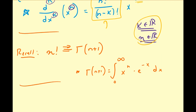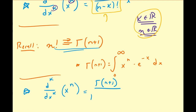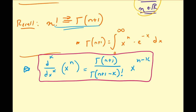If we assume this identity and rewrite the factorial expressions in terms of gamma, the kth derivative of x to the n is going to be equal to gamma(n+1) over gamma(n+1−k), times x to the n minus k. By induction, this gives us the extension of the power rule to real numbers k and n.